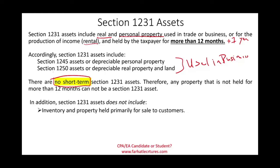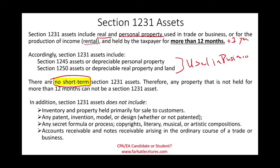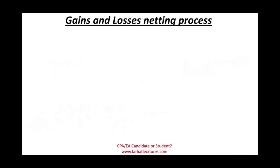Section 1231 specifically does not include inventory — property held primarily for sale to customers — which is an ordinary asset. It also excludes patents, inventions, copyrights, musical or artistic compositions, accounts receivable, and notes receivable arising in the ordinary course of trade or business. Those are all ordinary assets.